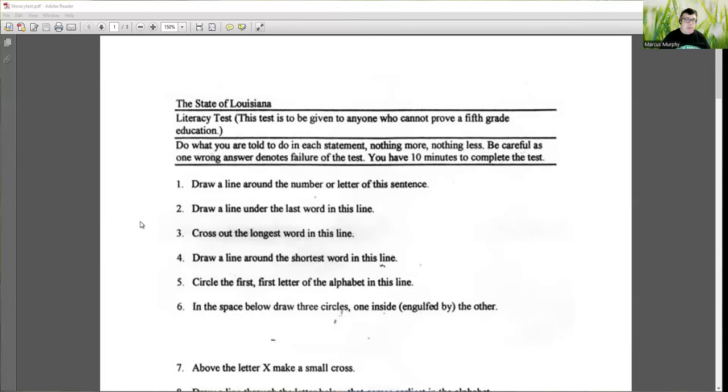This test is to be given to anyone who cannot prove a fifth grade education. Do what you are told to do in each statement, nothing more, nothing less. You can see already how wonderfully condescending it's getting. Be careful as one wrong answer denotes failure of the test. Has anyone done a test like that? I don't know on your exams at university or college where one wrong answer and you've screwed the whole test up. Normally you have to fail quite a bit of them or fail at least four or five. If it's 30 questions like this, you have 10 minutes to complete the test.